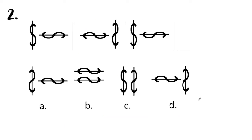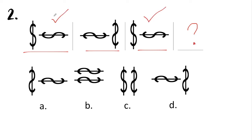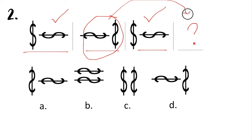Now we proceed to number two. We are given three sets of pictures and asked for the fourth set. If you look at the picture, the first set and the third set are exactly the same. This gives us the idea that the second set and the fourth set should also be the same. So the correct answer for this one should be letter D, because letter D matches the pictures in set number two. Letter D is the answer for number two.